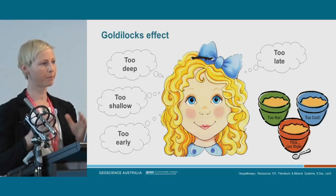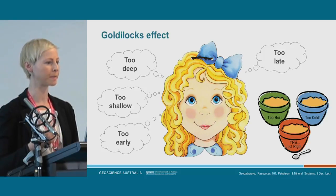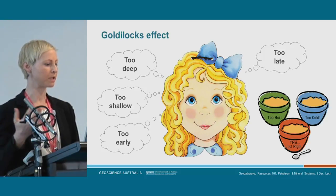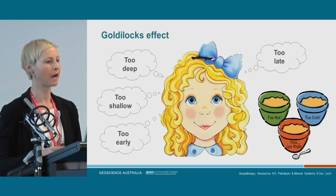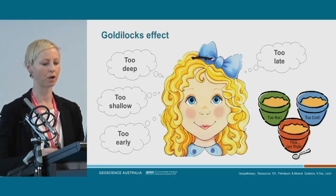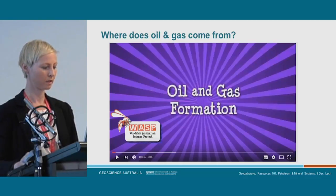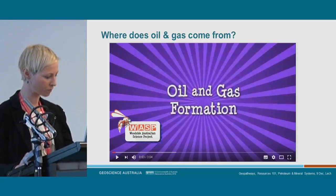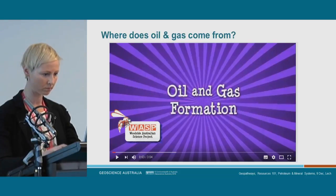Petroleum systems are a little bit like Goldilocks — they can be a bit fussy. They can't be too deep or too shallow, they can't be too early or too late, they can't be too hot or too cold. They have to be just right. Next, we're going to have a look at a video that tells you a bit more about oil and gas.